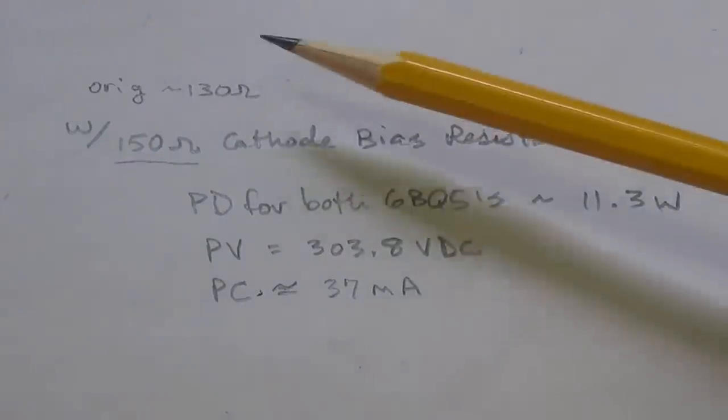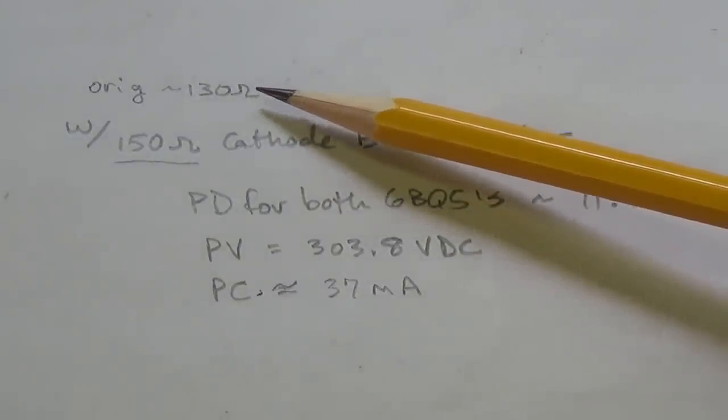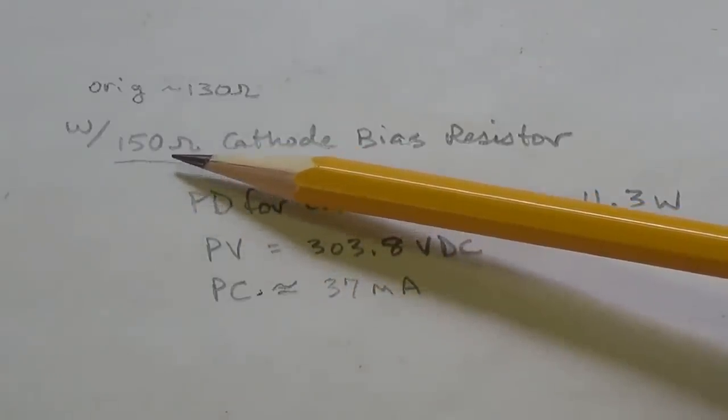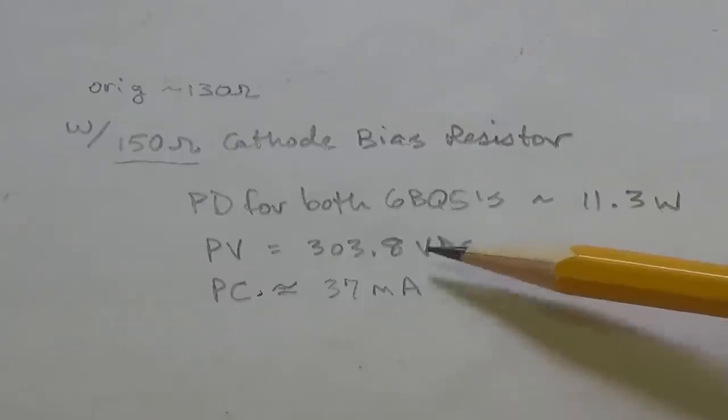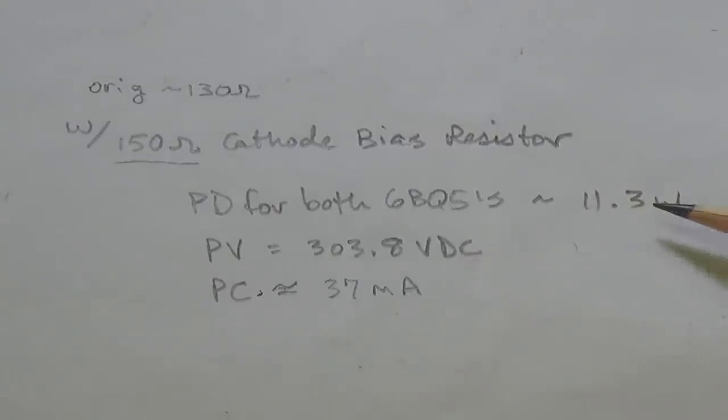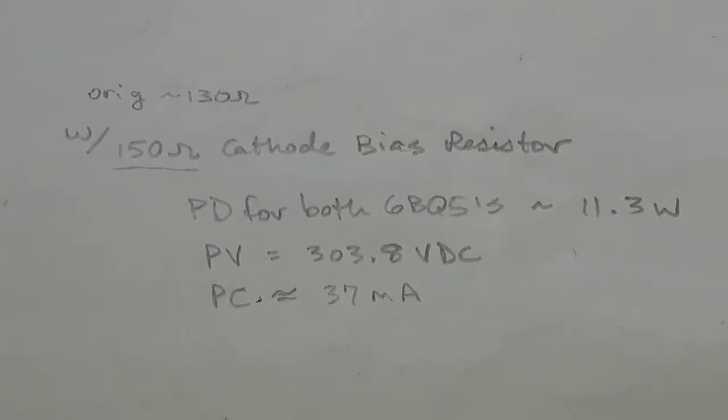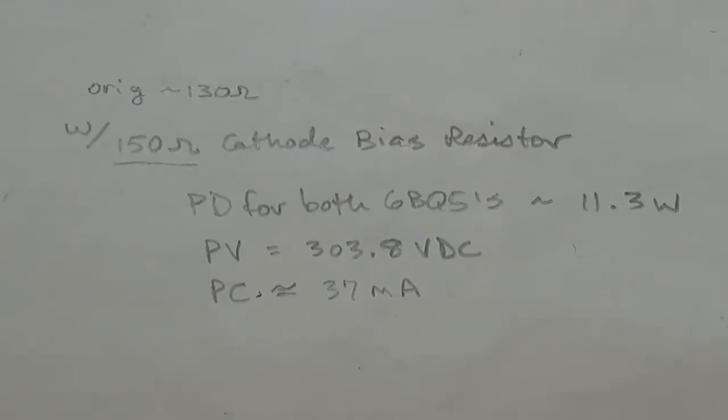And also, with respect to tube bias, I found with the original 130 ohm bias resistor that the plate dissipations were slightly above 12 watts for the 6BQ5s. So, I increased the bias resistor value to around 150 ohms, and ended up with these values for plate voltage, plate current, and plate dissipations that are comfortably under the maximum of 12 watts. This was probably necessitated by the increased wall socket voltage that we have now, up around 120 volts, compared to 110 back when the amp was originally designed.